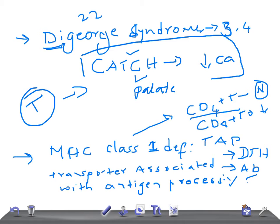Let me summarize. Selective T-cell Deficiency includes two diseases: DiGeorge Syndrome and MHC Class 1 Deficiency. DiGeorge Syndrome presents with cardiac involvement, facial involvement, thymic aplasia, cleft palate, and hypocalcemia or hypoparathyroidism; the chromosome involved is 22q11, and there is total loss of T cells. In MHC Class 1 Deficiency, if they give a history of recurrent viral infections with normal CD4 T cells but low CD8 T cells, think of MHC Class 1 Deficiency — the defect is failure of the TAP1 molecule to transport peptides to the endoplasmic reticulum.